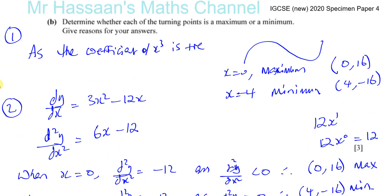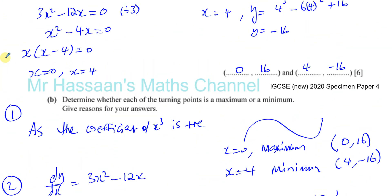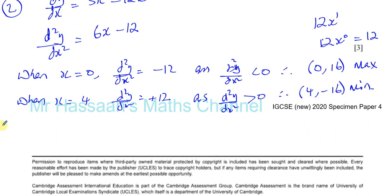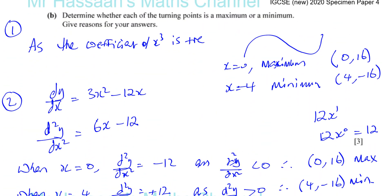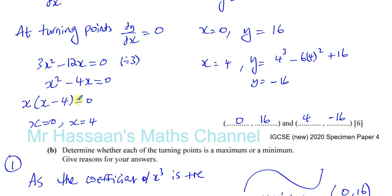Those are two different methods you could use. There's also a tabular method, but we don't need to go into that for now. That's parts A and B of question number 11 from the 2020 Specimen Paper — which I think was the last question on the paper. As I answer the questions, they will appear on the playlist. The link for the playlist is in the description below, and there should also be a pop-up appearing. Thank you for watching.